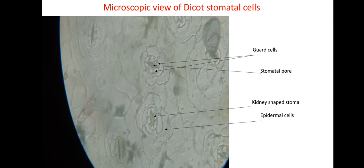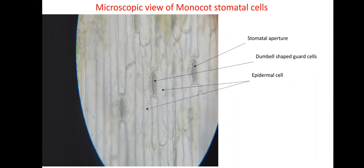The next slide gives the microscopic view of the dicot stomatal cells. After the slides were prepared, I magnified them under the compound microscope at 40x magnification. This is the actual photograph — the microscopic view of the dicot stomatal cells. I have labelled the guard cells, the stomatal pore — that is the kidney-shaped stoma — and the epidermal cells based on the microscopic view observed under the compound microscope.